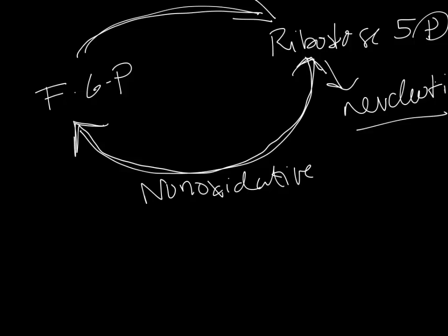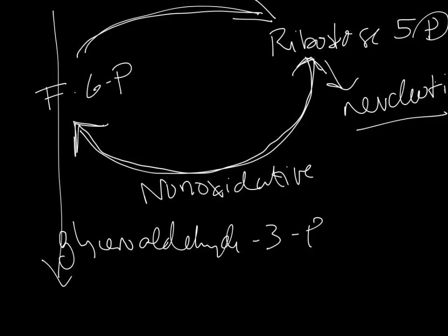It re-enters back into the glycolytic pathway either at fructose 6-phosphate or glyceraldehyde 3-phosphate, both in the glycolytic pathway. The important part of this is that it's a reshuffling. The enzyme is transketolase.